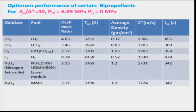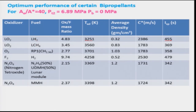The area ratio AE/A* of the nozzle is 40, chamber pressure is 6.89 MPa, and back pressure is 0 MPa (essentially space conditions). Liquid oxygen and liquid hydrogen at the stoichiometric oxidizer-to-fuel ratio gives a combustion temperature of 3251 K. The average density is very low at 0.32 due to hydrogen being a lighter molecule, and you get a characteristic velocity of 2386 m/s and ISP of 455 seconds. When liquid methane is used in place of liquid hydrogen, the density increases and both characteristic velocity and specific impulse decrease; that is also true with RP fuel.